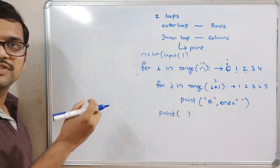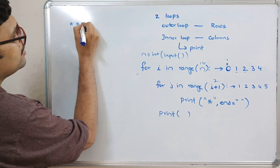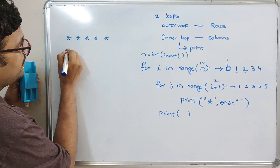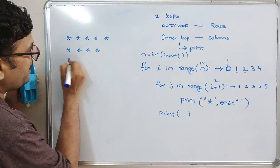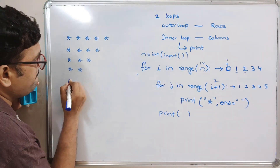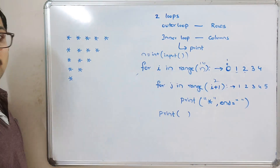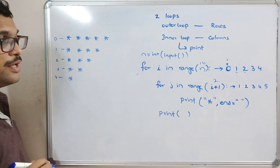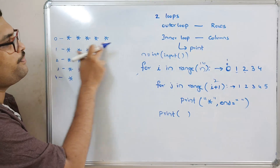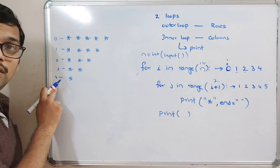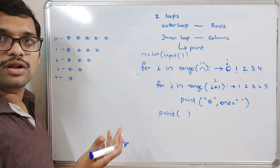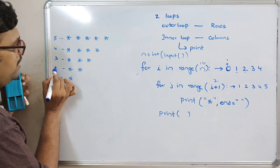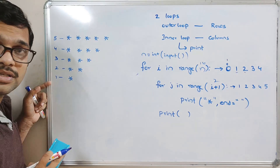Next we'll see the second pattern — the reverse of the first one. The same logic applies, but here for the zero-th row five stars should be printed, then four, three, two, one. Rather than incrementing, we take the values in a decremented way — in reverse order.